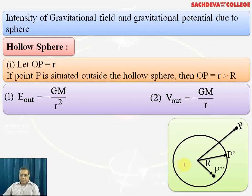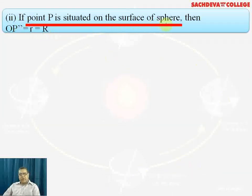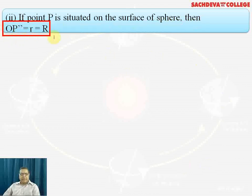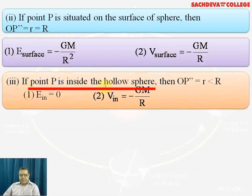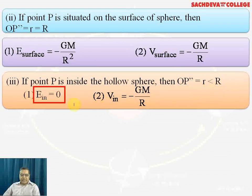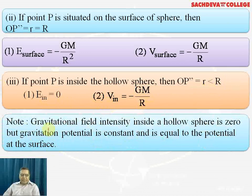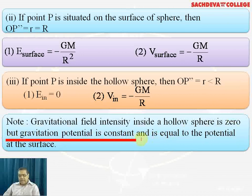Referring to the figure for a hollow sphere: if point P is on the surface, r equals R, so the gravitational intensity is -GM/R² and potential on the surface is -GM/R. If point P is inside the hollow sphere, the gravitational field intensity E is zero, but the gravitational potential inside remains constant at -GM/R, equal to the surface potential.